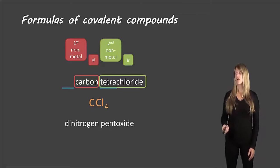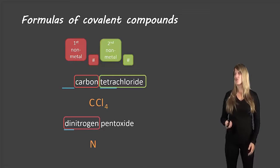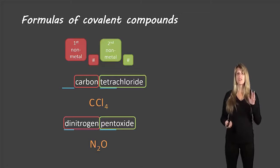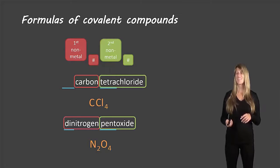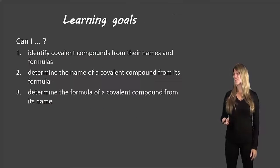Another example: dinitrogen pentoxide. Dinitrogen is our first element — 'di' means two and nitrogen is N, so we write N with subscript 2. Then pentoxide: 'penta' is five and 'oxide' refers to oxygen, so we write O with subscript 5. The formula is N2O5.